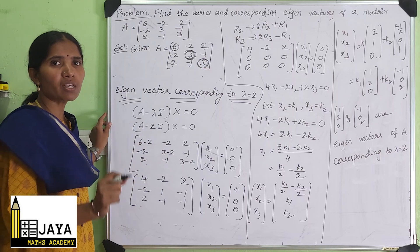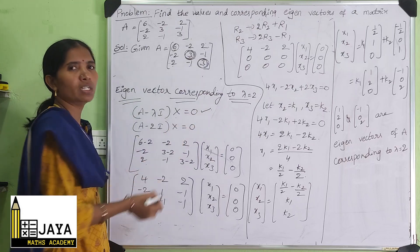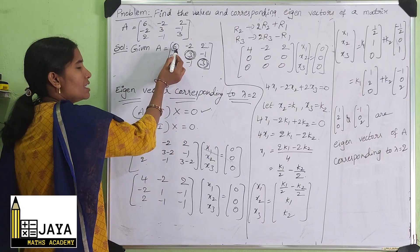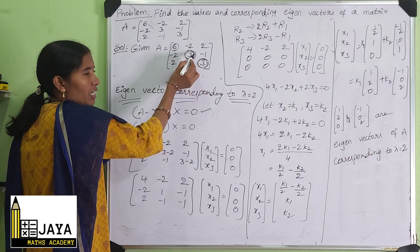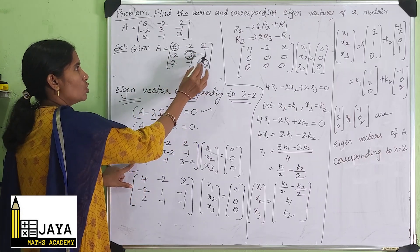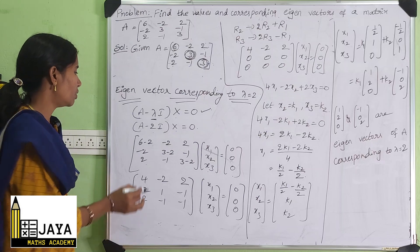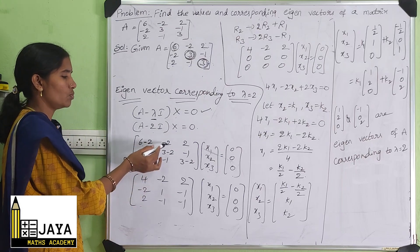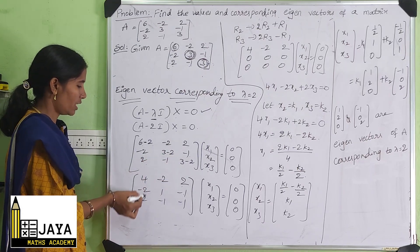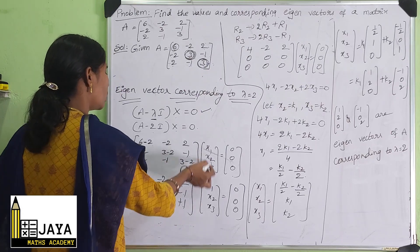Next, finding the eigenvector corresponding to λ = 2. Using A - 2I: diagonal elements become 6-2=4, 3-2=1, 3-2=1. So A - 2I = [[4, -2, 2], [-2, 1, -1], [2, -1, 1]], and (A - 2I)X = 0 gives [X1, X2, X3]ᵀ = [0, 0, 0]ᵀ.